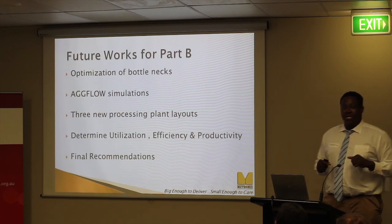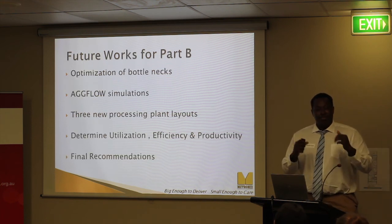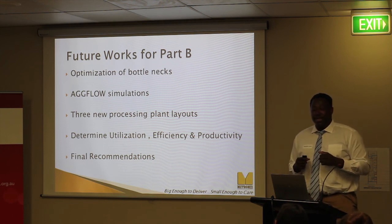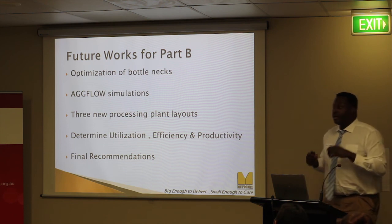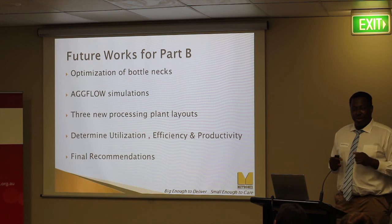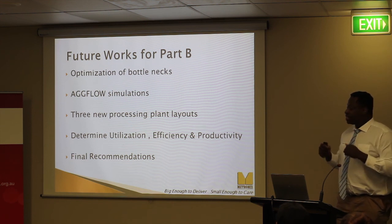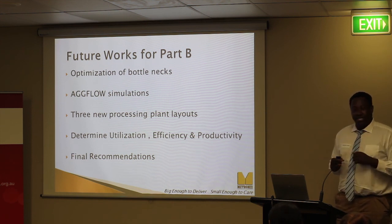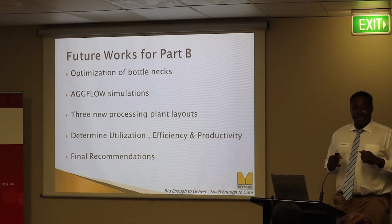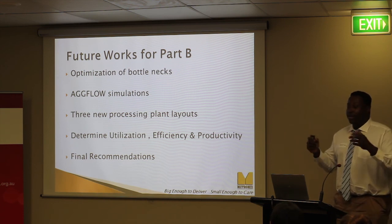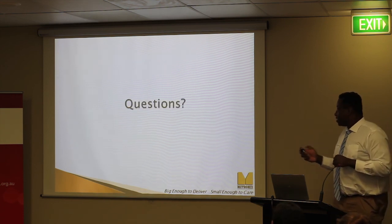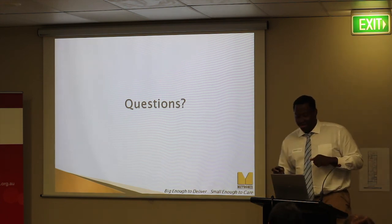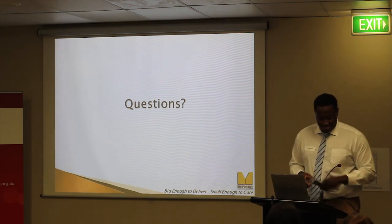This leads me to what I'll be doing in part B of my project. Number one, I want to optimise the bottlenecks identified in part A. Then I want to model at least three different processes in Agflow, simulate them, and get the performance shown in my objective slide. If I get that performance, I'll make my recommendations. This concludes my presentation. Are there any questions?